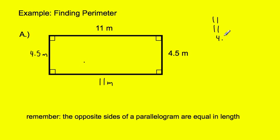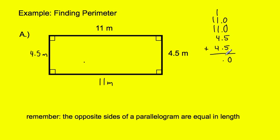We have two 11s and two 4.5s. Making sure to line up all the ones, and adding zeros to make sure that all the tenths are lined up. Now I have four sides, four things I'm adding up. Zero plus zero plus five plus five equals 10 — that's 10 tenths. Then ones: one plus one is three, plus four is seven, plus four is 11. Then the tens: three tens, which makes it 31. The perimeter equals 31 meters.